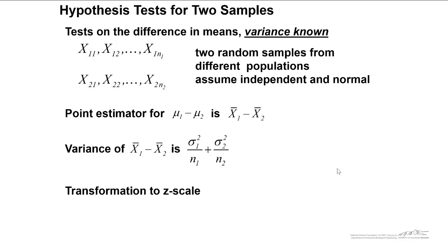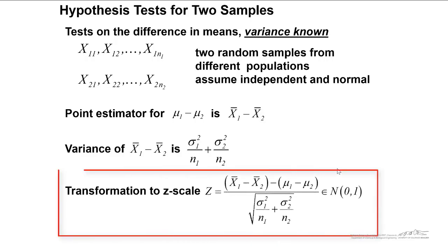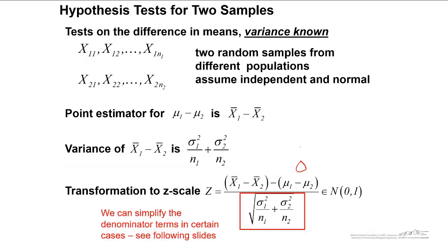If we transform this to the z-scale, the difference in means follows the normal distribution. The z-value you can compute is as follows: take the difference in averages, subtract the hypothesized difference in means — a lot of times this is equal to zero — and then divide by the square root of the variance. Note that this denominator will be a little different in some forms shown later in this screencast, because we can simplify it depending on whether the variances are equal or the sample sizes are equal.